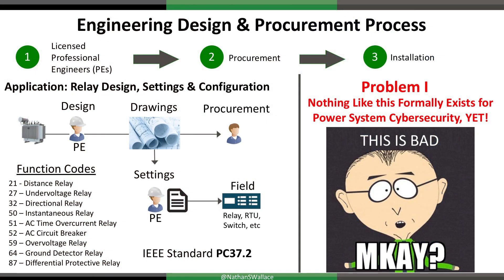So, engineering design and procurement process. Licensed professional engineers — and this is applicable to all aspects of the power grid, whether you're engineering a substation, engineering automation, or building a power plant — follow a formal, tried-and-true process. First, licensed professional engineers come up with their design. They go back to their toolkit and say, this is what I'm trying to do, this is the application I'm trying to protect. Then they go out for procurement, and then installation.